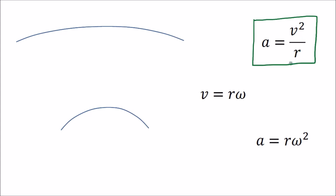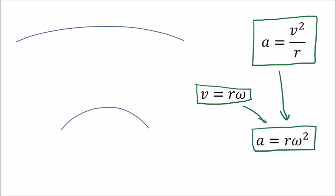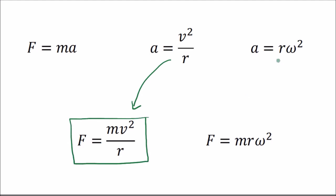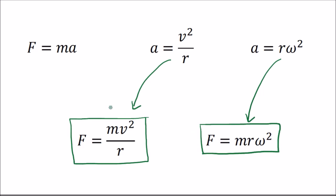Since v = rω, we can substitute into a = v²/r to get another variant of the acceleration equation. For the force, it's simply a case of applying F = ma. Since a = v²/r, substituting gives F = mv²/r. Using the other variant of a in terms of omega gives another form of the centripetal force equation.